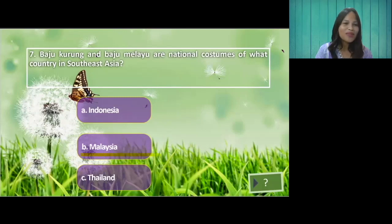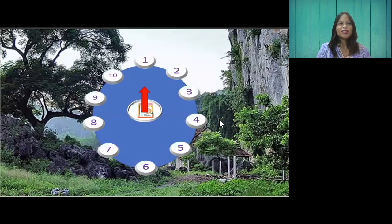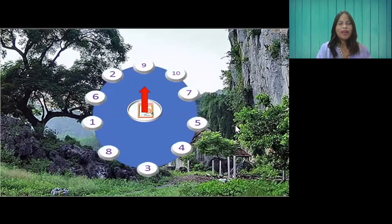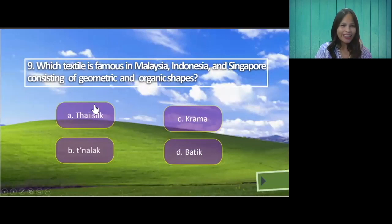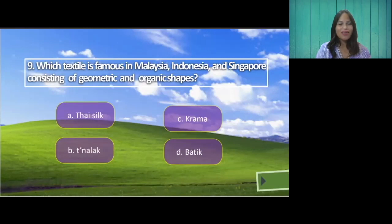Okay, next question — last question. Spin. We have number nine. Which fabric style is famous in Malaysia, Indonesia, and Singapore, consisting of geometric and organic designs? A. Thai silk. B. Tinalak. C. Krama. D. Batik. The answer is letter D — Batik.